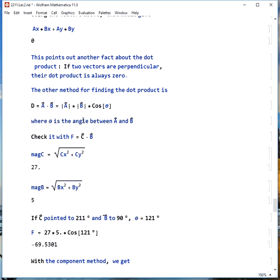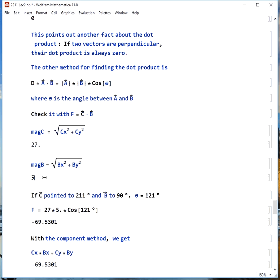The other way we could figure that out is to use the other method for finding the dot product, and that says we could take the magnitude of A times the magnitude of B times the cosine of the angle between them. So, if we say F is C dot B, for example, the magnitude of C is, and this is our rock from before, this is going to be 27 meters per second, which we knew. The magnitude of B is 5, so if we take 27 times 5, and then the cosine of the angle between them, well, if C was at 211 degrees and B was at 90 degrees, the angle between them is 211 minus 90, or 121. So 27 times 5 times cosine of 121 is negative 69.5 for our dot product.